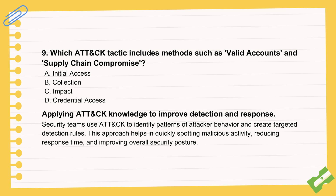A question covers initial access. It lists techniques like valid accounts and supply chain compromise. Initial access is that critical first step: getting your foot in the door of the target network. Using valid accounts means the attacker got hold of real usernames and passwords, maybe through phishing or buying them online, and logs in like a legitimate user. Supply chain compromise is where attackers tamper with legitimate software or hardware before it reaches the target — hiding malware in a software update, for example.